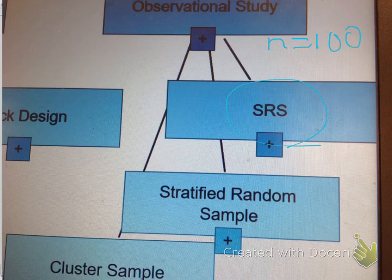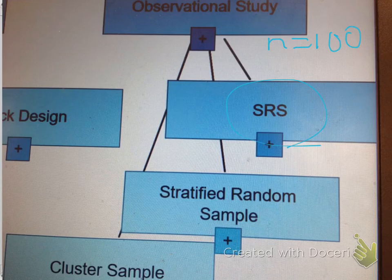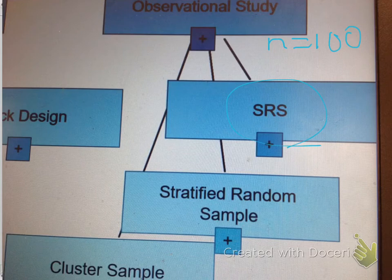SRS, simple random sample. I'm looking for the four things. Label, how you use the table. I'm looking for repeats and throwing out. And finally, I'm looking for stopping row.